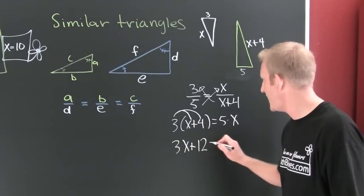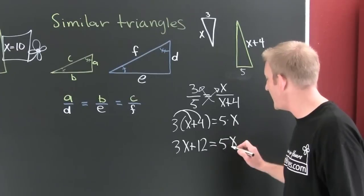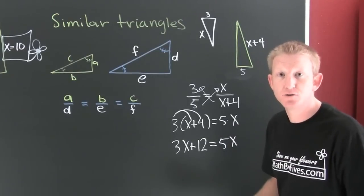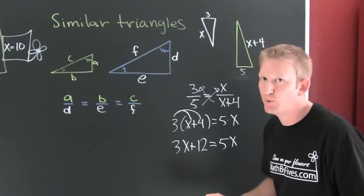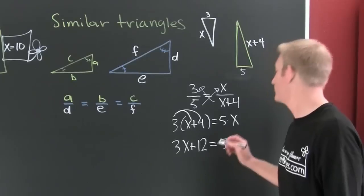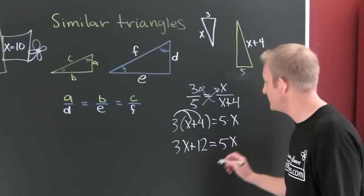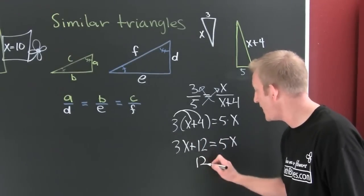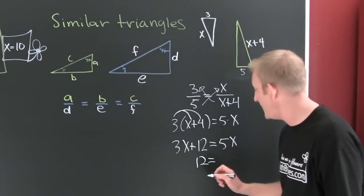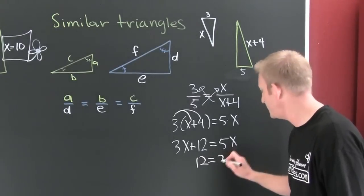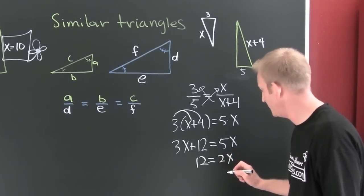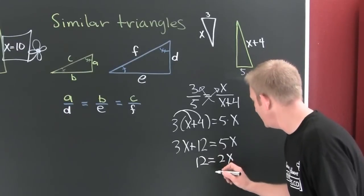3x plus 12, yes, that's going to be equal to 5x. I got x's on both sides, want them on one side. Which side? Don't care. Right side? Subtract off a 3x, and then 2x. Finish him! No no no, you've already done too much. Okay, yeah,